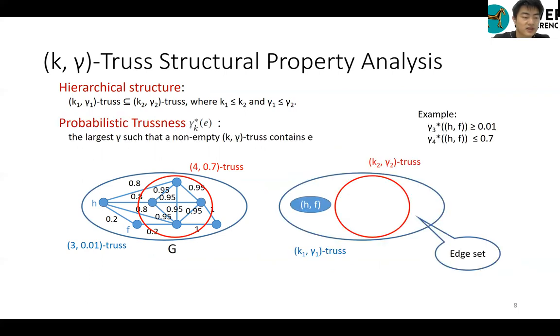Then we define a key concept of probabilistic trustness, gamma-star. Given an edge E in G and an integer k, the probabilistic trustness is defined as the largest probability gamma, such as there exists a non-empty k-gamma-trust containing E.